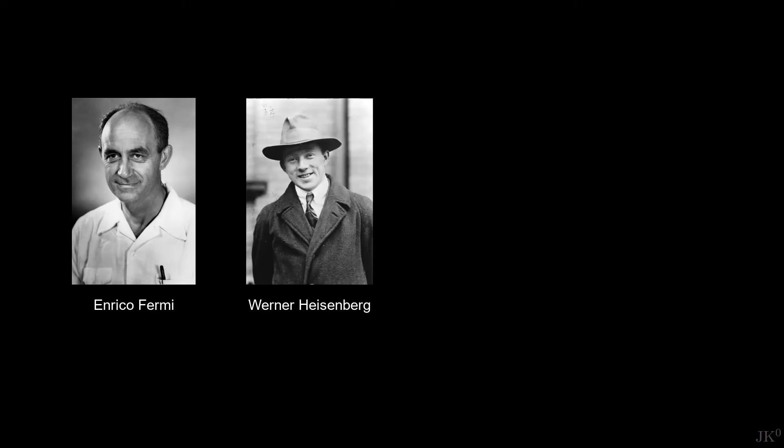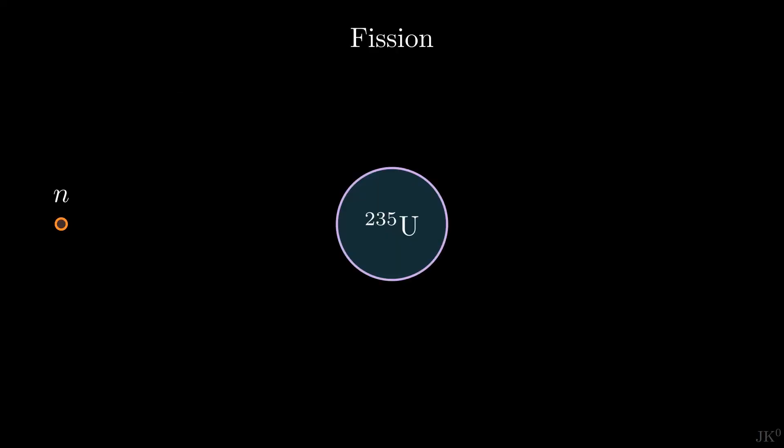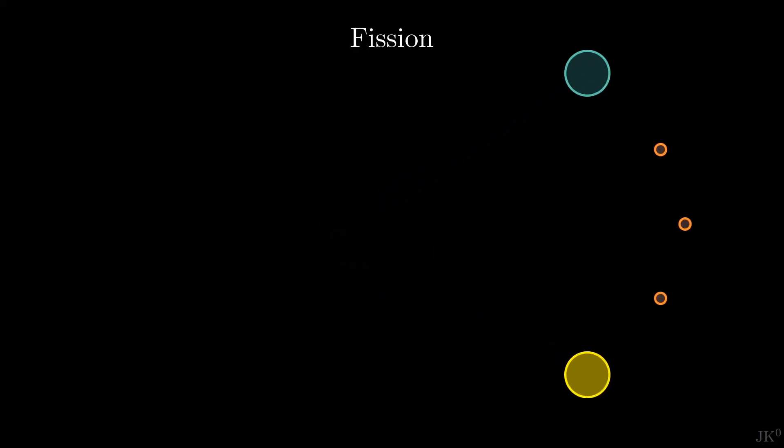This is the calculation that Enrico Fermi in the US and Werner Heisenberg in Germany did, and why they knew that a self-sustaining nuclear chain reaction was possible with natural uranium. Since all the secondary neutrons produced by fission move very fast, all that was needed was a way to slow them down.